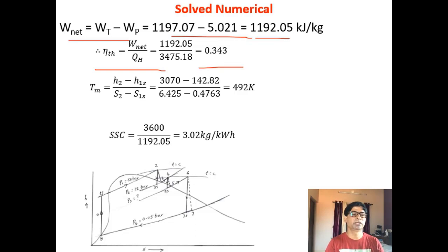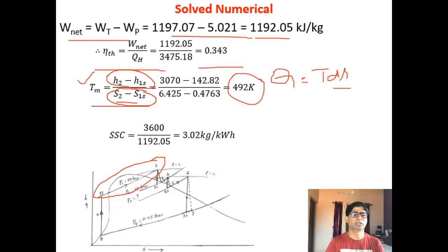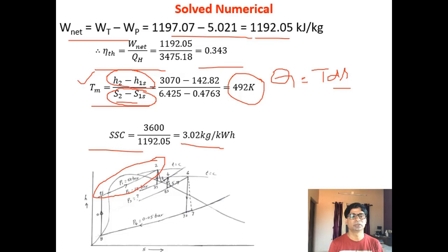The thermodynamic mean temperature of heat addition is calculated as Tm = (H2 − H1S) / (S2 − S1S), using Q = T·ΔS, giving Tm = 492 Kelvin. Specific steam consumption is 3.02 kg per kWh. I request all students to verify the substitution and answers — the procedure and method are correct. This concludes lecture number 8; I will continue solving more problems in the next lecture. Thank you.